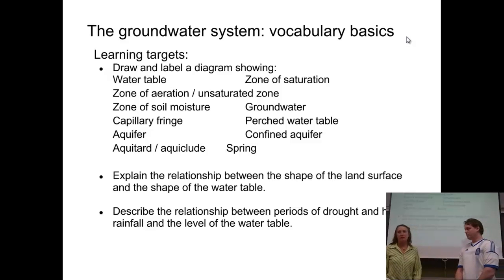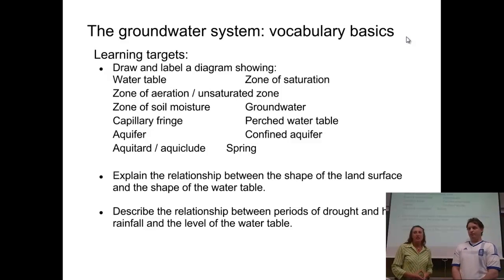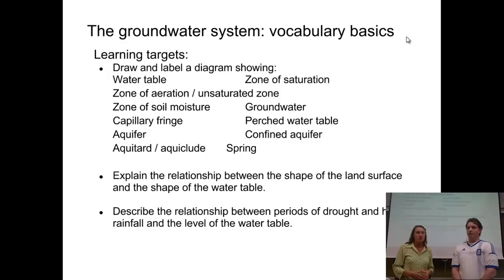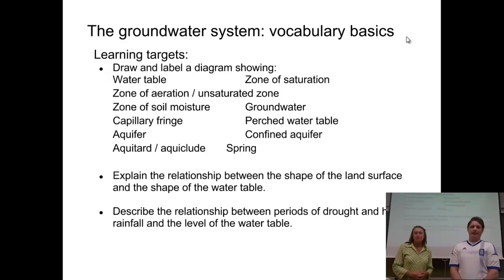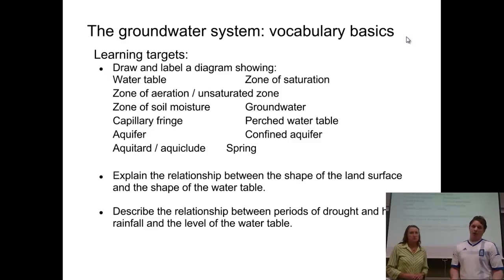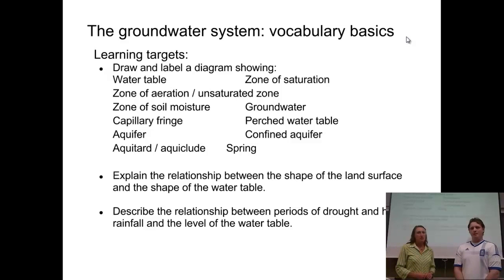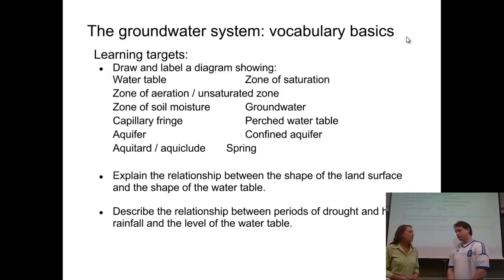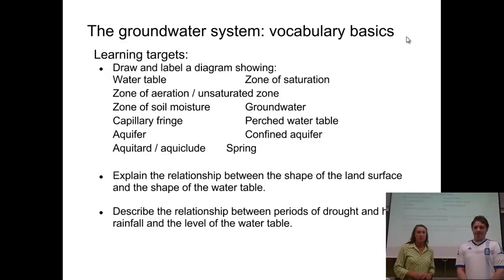Luckily, lots of it's very visual. So let's start out with the learning targets. The first learning target is to draw and label a diagram — we're going to go through each one of those terms and show you where they are in a general underground water system diagram. The next learning target is explaining the relationship between the shape of the land and where the water table is. Third, we're going to look at what happens during periods of drought or periods of heavy rainfall in terms of the level of the water table.